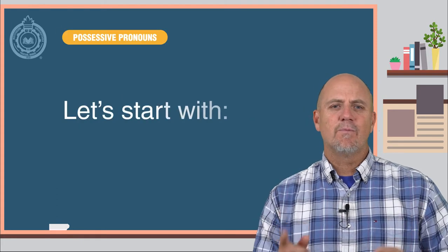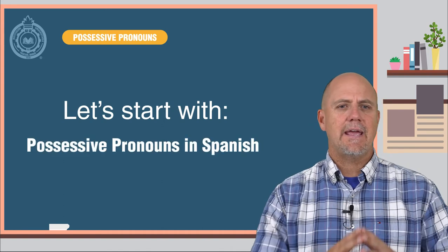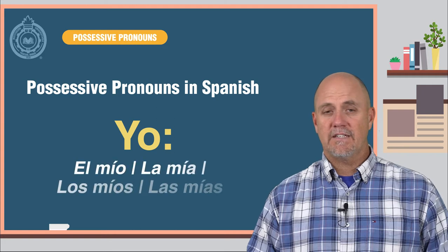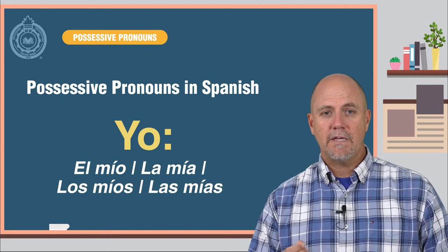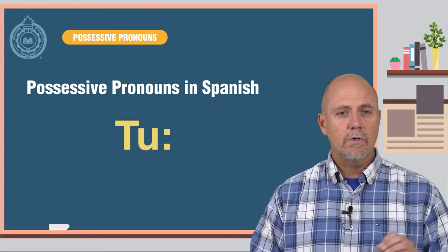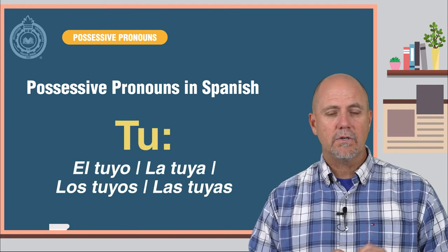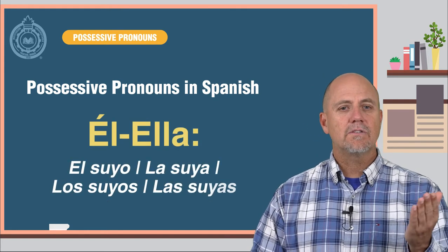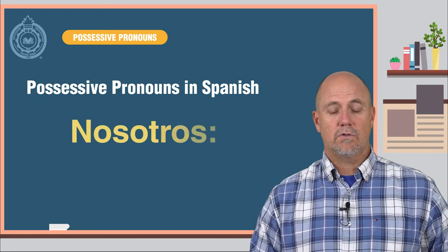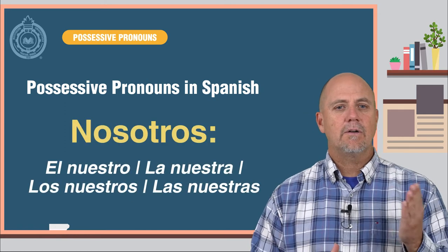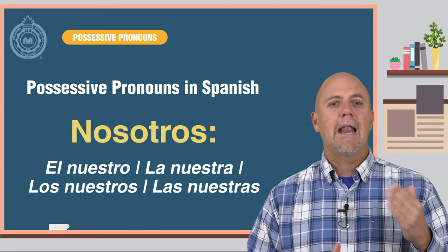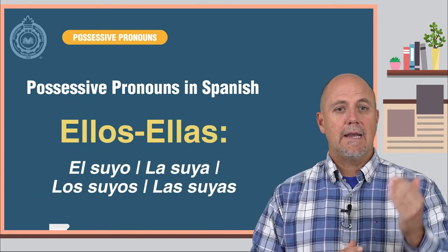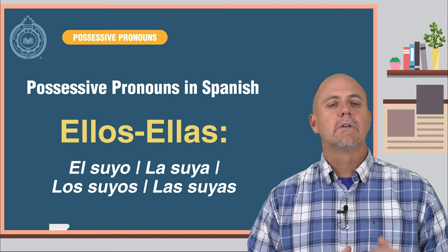Let's start with what you already know: possessive pronouns in Spanish. If the subject is yo, the possessive pronoun is el mío o la mía, los míos o las mías. Tú: el tuyo, la tuya, los tuyos o las tuyas. Él o ella: el suyo, la suya, los suyos, las suyas. Nosotros: el nuestro, la nuestra, los nuestros, las nuestras. Ellos o ellas: el suyo, la suya, los suyos, las suyas.